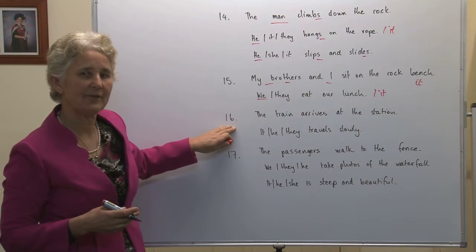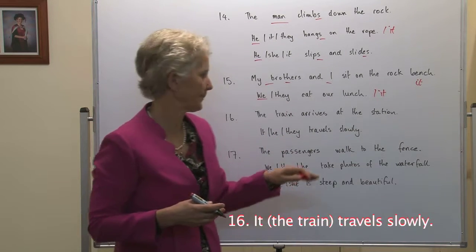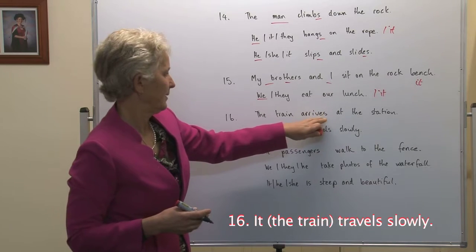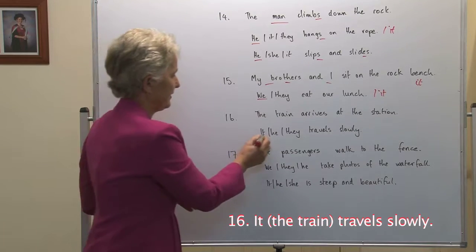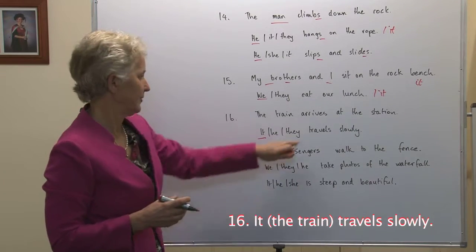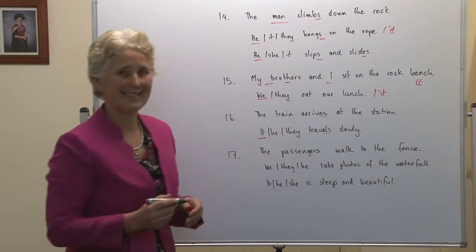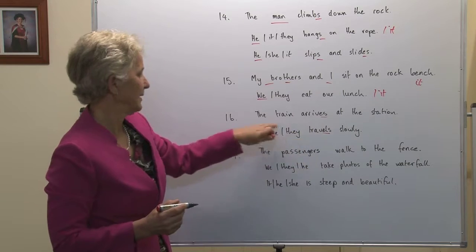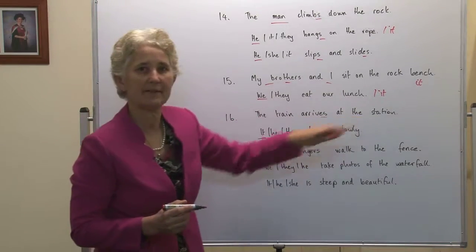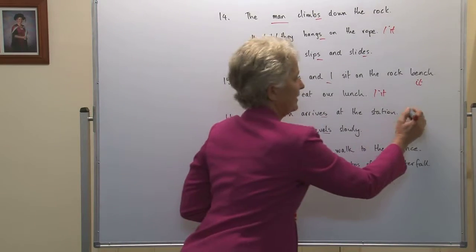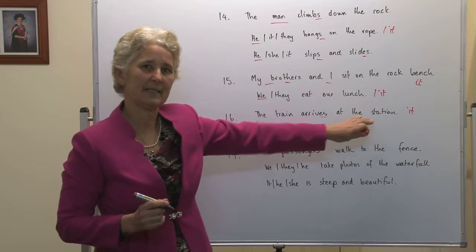Number sixteen: The train arrives at the station. It, he or they travels slowly. We're referring to the train — it is a thing, it travels slowly. Notice once again, it's present tense — arrive and travels. If we wanted to replace the station, the train arrives at the station — object, it's a thing, it's in the singular. The train arrives at it.